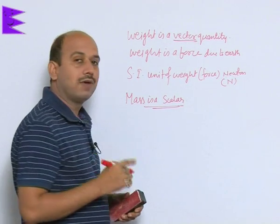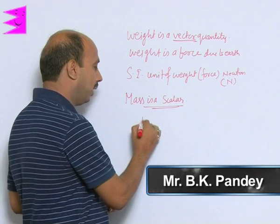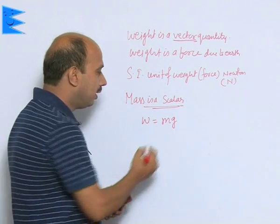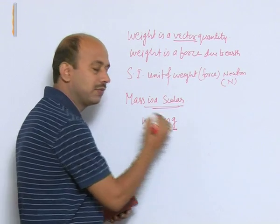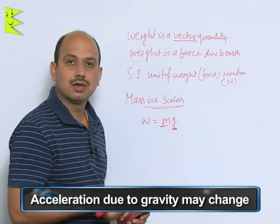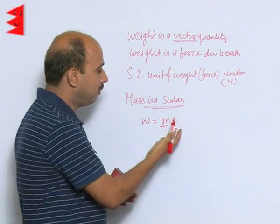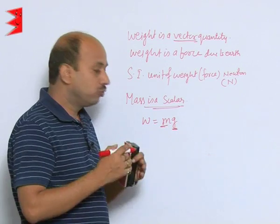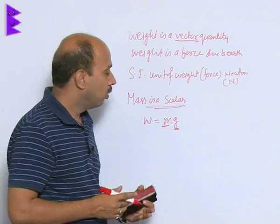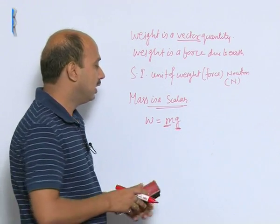Another difference: the value of acceleration due to gravity, which comes into weight as W is equal to m into g — the acceleration due to gravity may change. If you are going from earth to the moon, acceleration due to gravity will be different. Also, on the surface of earth, acceleration due to gravity may change. So the weight of the body may change.